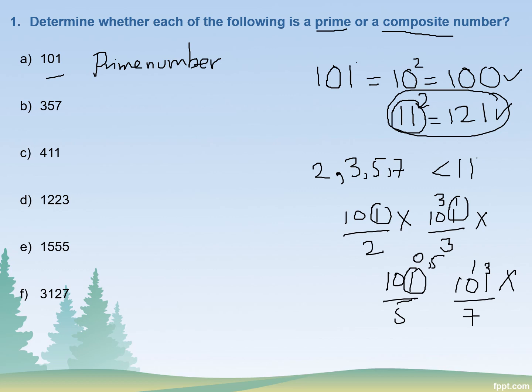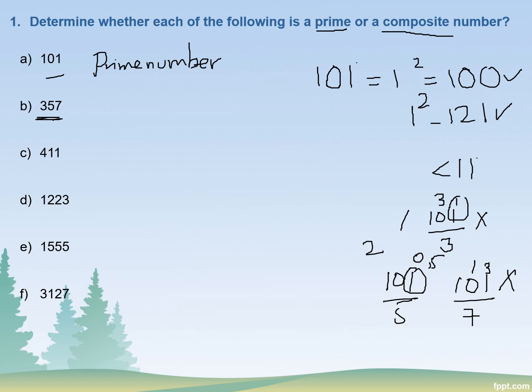As you checked for all the prime numbers less than 11, this is basically the technique you use for greater numbers. Since 101 is not divisible by any of those prime numbers, it is a prime number and not a composite number. You can pause the video and try the next number, 357, by yourself.